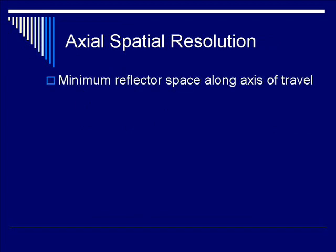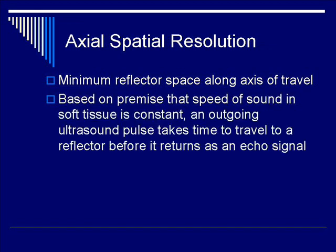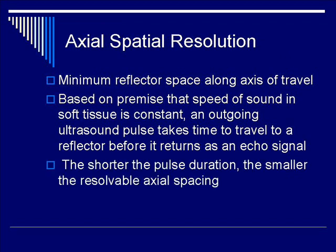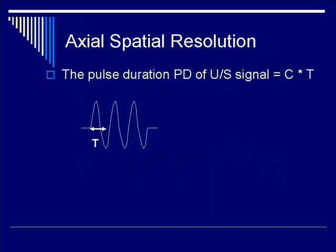Axial spatial resolution describes the minimum reflector spacing along the axis of travel. It's based on the premise that speed of sound is finite. An outgoing ultrasound pulse will take time to reach the reflector and also time to return as an echo signal. Therefore, the shorter the pulse duration, the smaller the resolvable axial spacing.